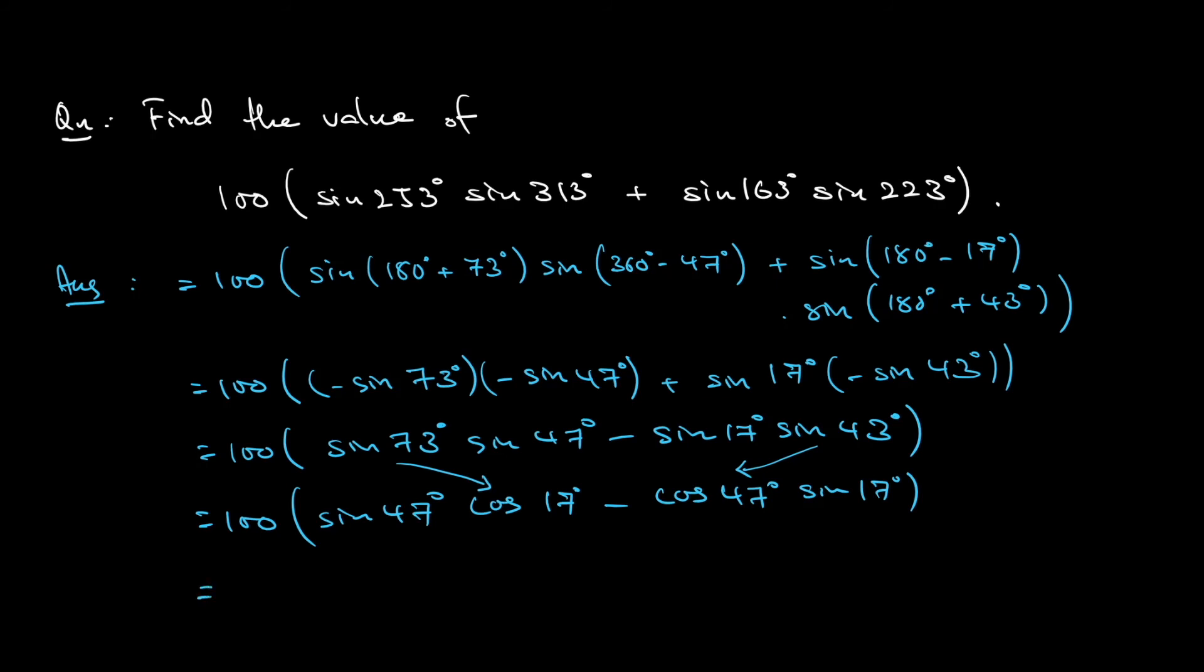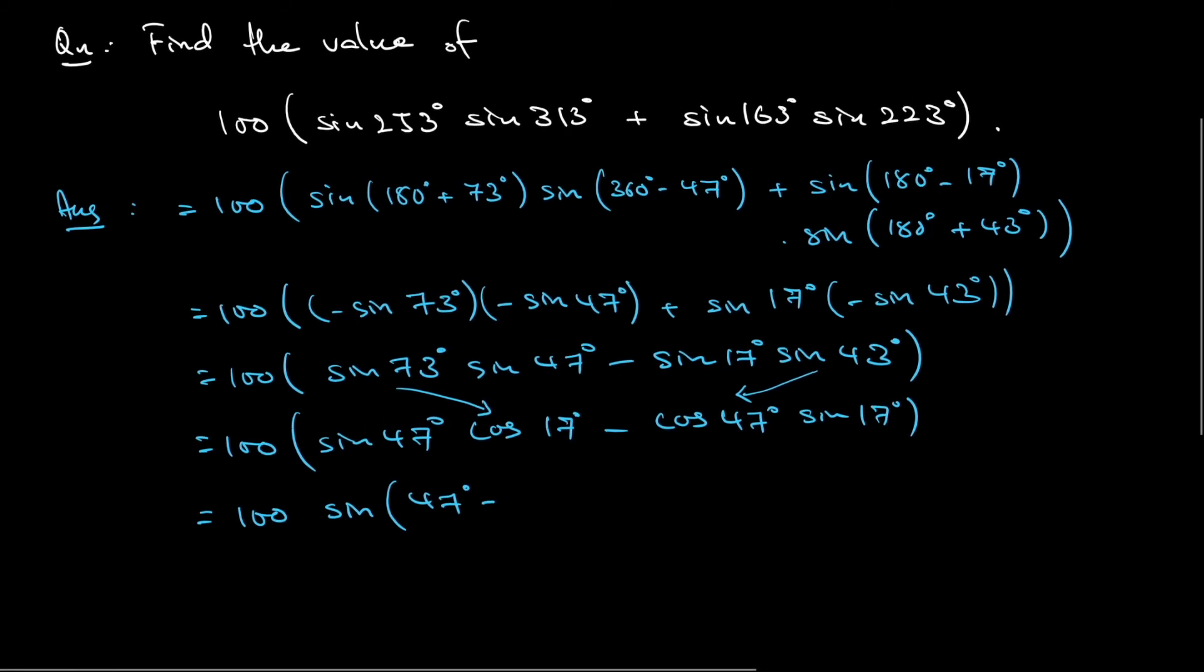In the bracket, what do you notice? Sine A cosine B minus cosine B sine A. That is in fact the sine of the difference of the angles. So that would be 47 degrees minus 17 degrees. So it's 100 times sine 30 degrees.